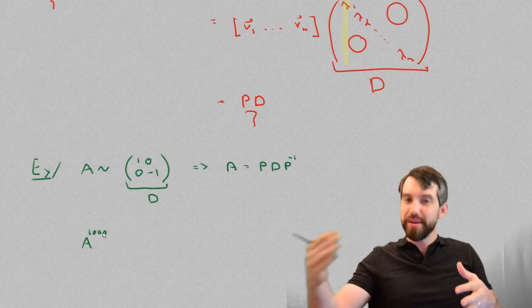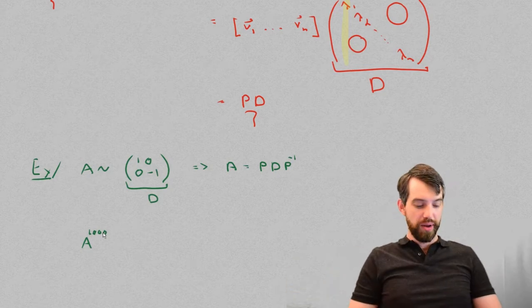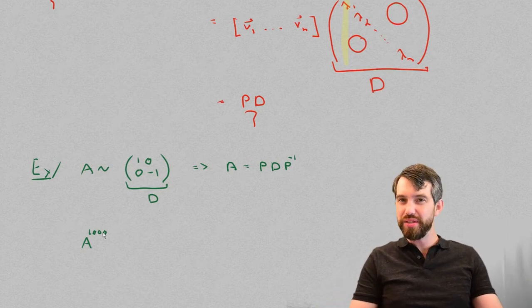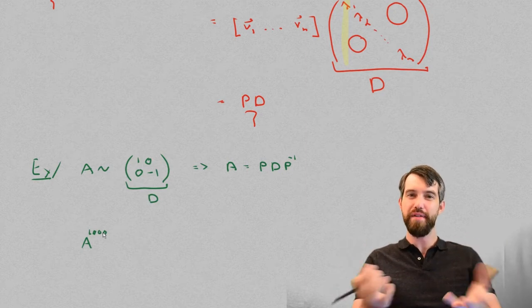As in A times A times A, 1,000 times. Now, I haven't told you what the A itself is. It's just some matrix. But we can imagine that that would be really complicated to do. Multiplying a matrix 1,000 times is going to take a lot of effort.